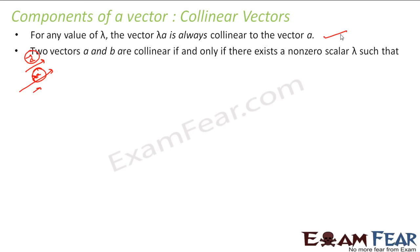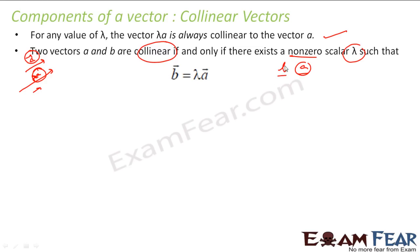Two vectors are collinear if and only if there exists a non-zero scalar λ such that b = λ·a. So b and a are collinear if and only if there is some λ such that b = λ·a. This is just the flipped version of the same theorem.